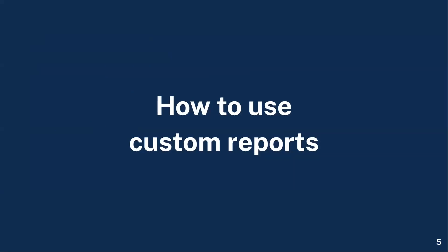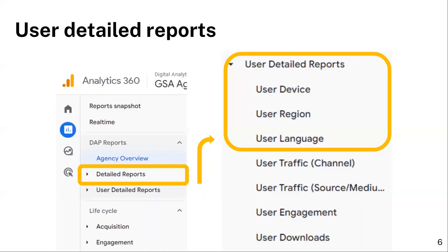To help you get started with DAP GA4 reporting, we created a set of basic custom reports to deliver website traffic and usage metrics as well as user demographics and engagement reports. The user detailed reports are located on the left navigation bar under DAP reports. In this video, we will cover three: user device, user region, and user language.